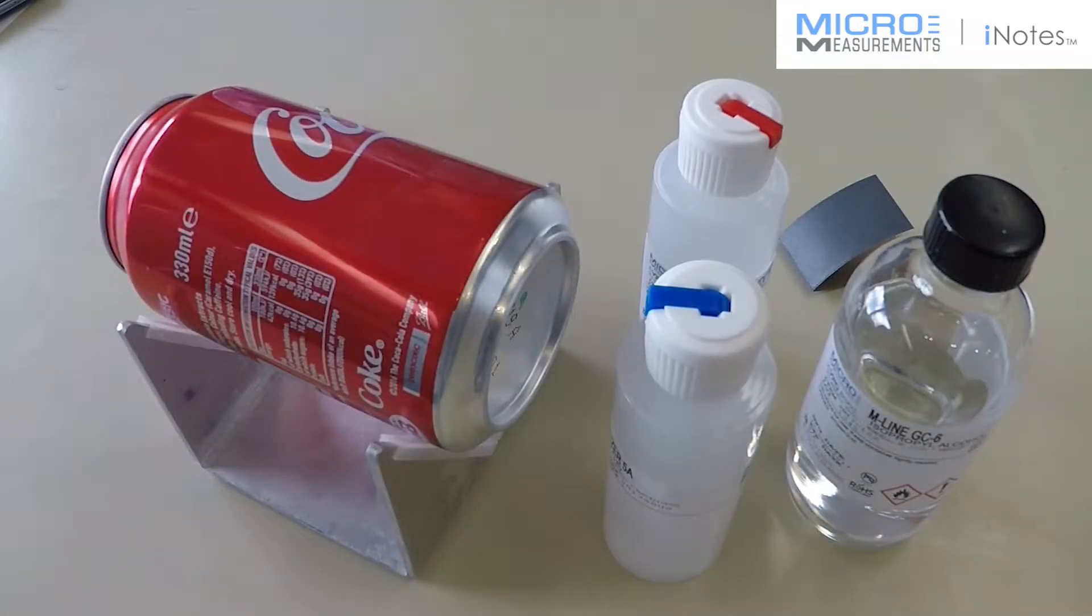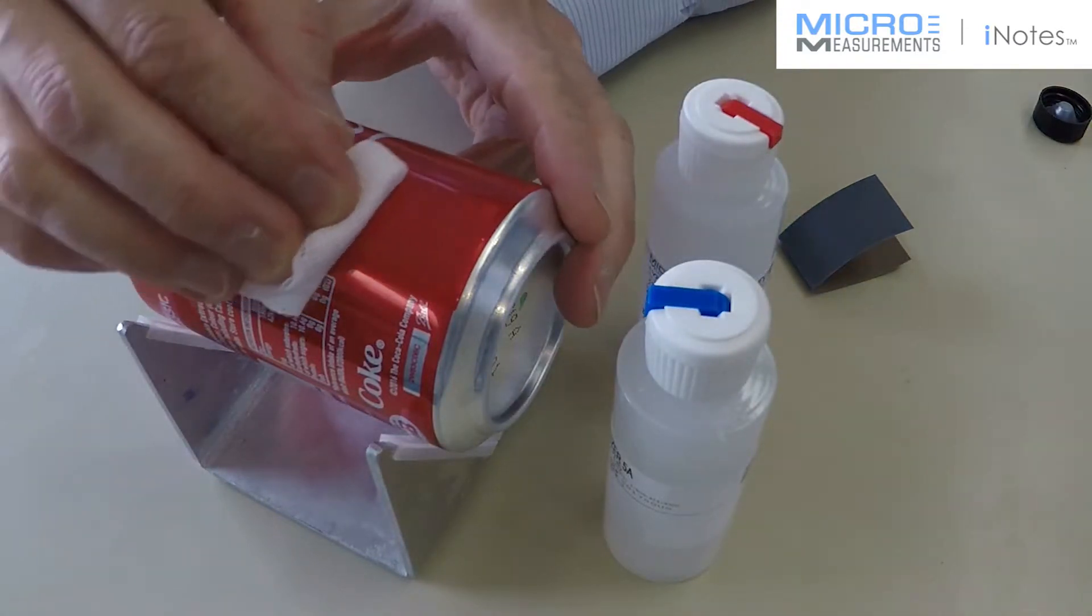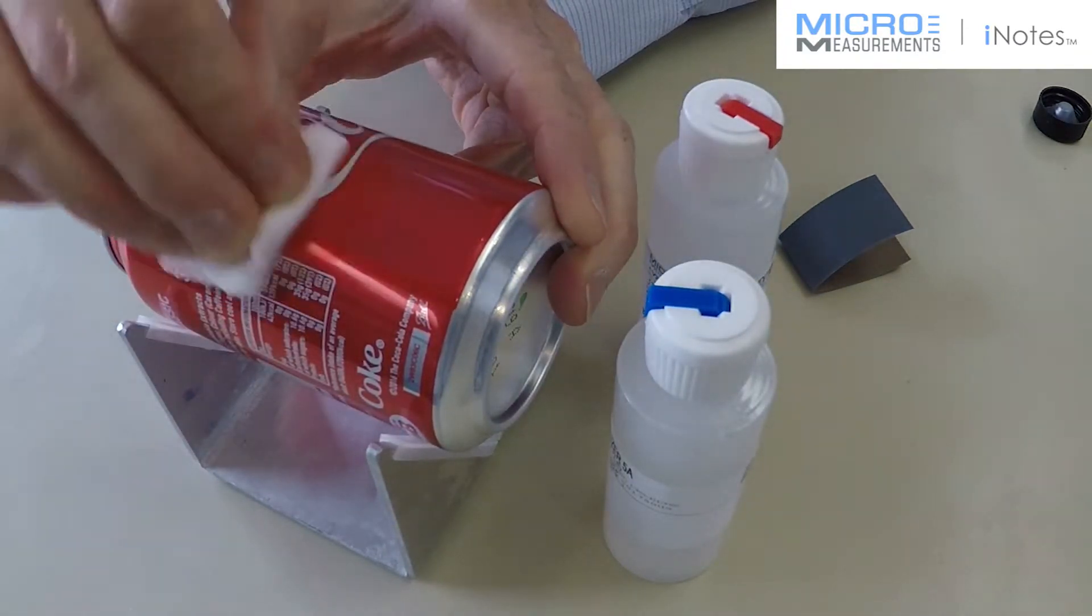I'm going to install a strain gauge on this Coke can to convert it for torsion measurement in a similar way you might do for a drive shaft. I'm going to use normal surface preparation techniques. So, I'm going to degrease, abrade with conditioner, scrub with conditioner, scrub with neutralizer. And in this video, I'm not going to show you the entire process, you'll just see some highlights. So, starting with degreasing.